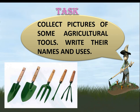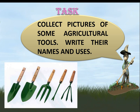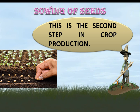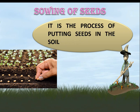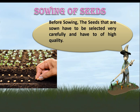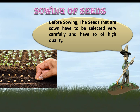Now there is a task for you: collect pictures of some agricultural tools and write their names and uses. Sowing of seeds is the second step in crop production. It is the process of putting seeds in the soil. Before sowing, the seeds have to be selected very carefully and must be of high quality.